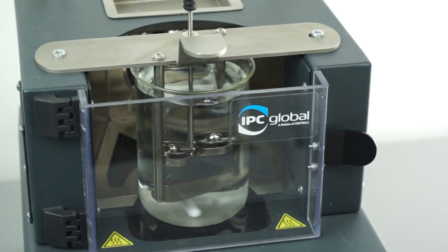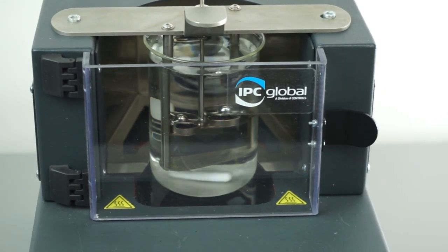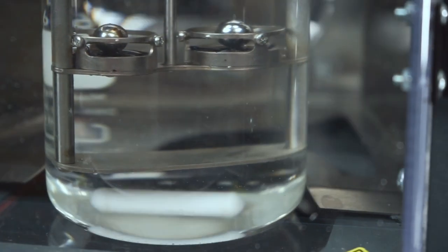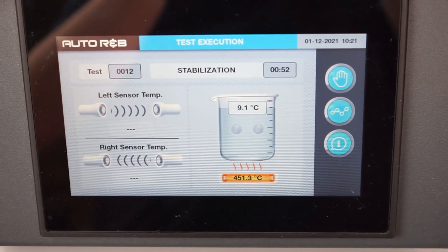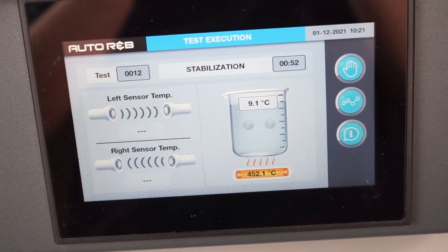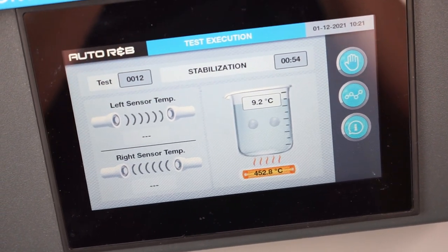The stirrer is activated and the hotplate starts to apply 5 degrees Celsius per minute temperature rise. During the test, the display shows the test temperature, the hotplate temperature, and the status of the two sample position sensors.